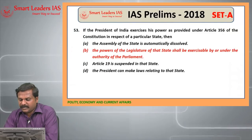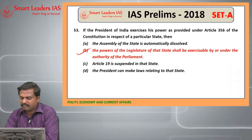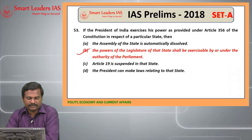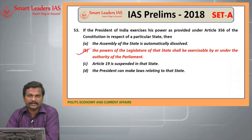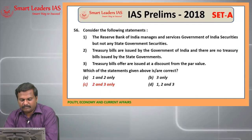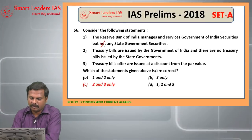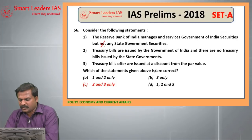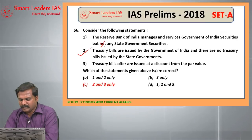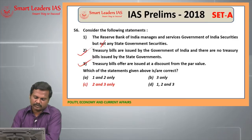53rd question: if the President of India exercises power as provided under Article 356, the power of the legislature of the state shall be accessible by or under the authority of the Parliament — this is the right answer given in Article 356. 54th question: Reserve Bank of India manages and services Government of India securities but also state government securities. Treasury bills are issued by the Government of India and not by the state government — this is the right statement. Treasury bills are often issued at a discount from the par value — this is the right statement. So the answer is 2 and 3 only.